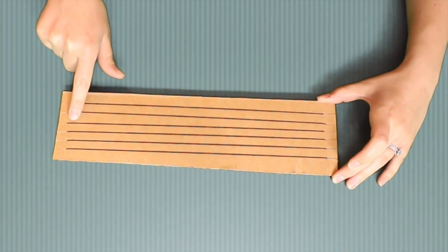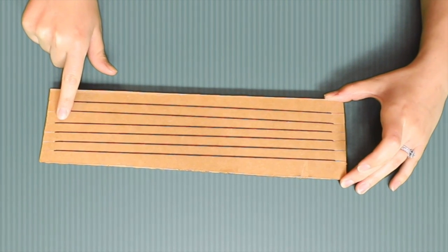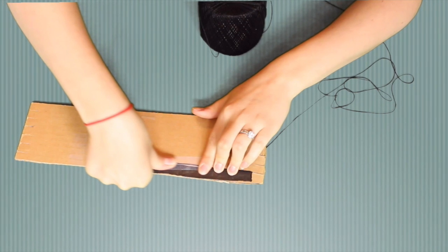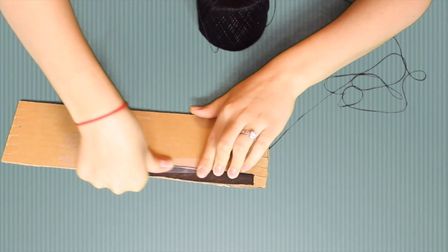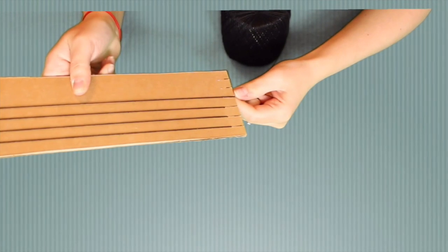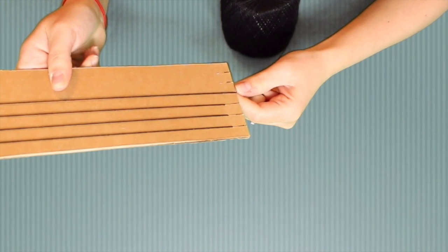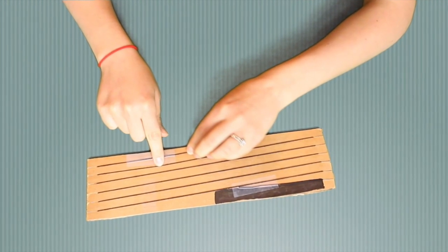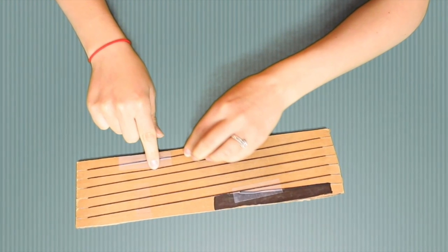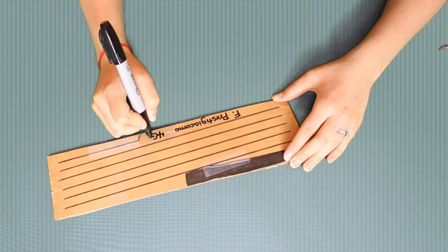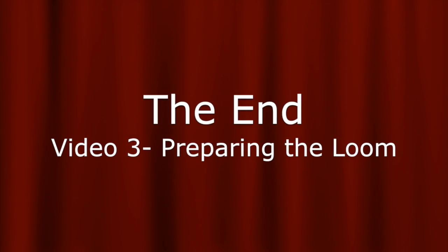In this video, you learned how to thread your loom to prepare for weaving. Remember, insert your thread into the first notch on your loom and secure with tape. Wrap the thread around the loom securing it into each cut notch. Cut the end of the thread and tape it down to the back of the loom. Write your name and class code. Now you are ready to move on to your next video.